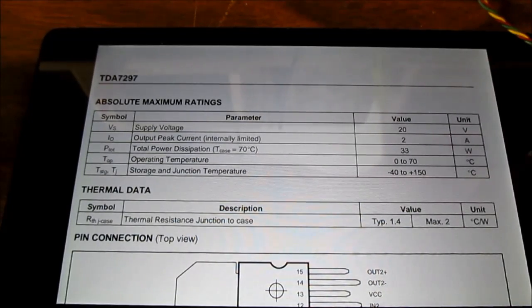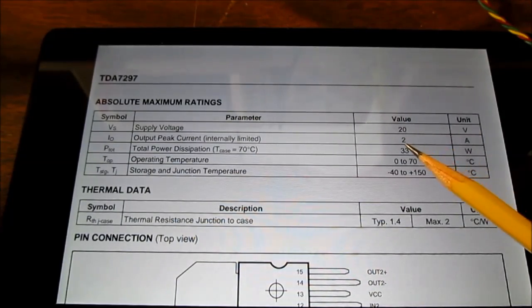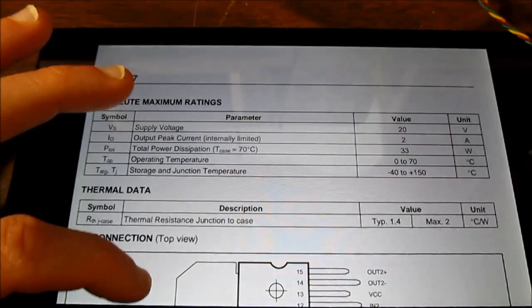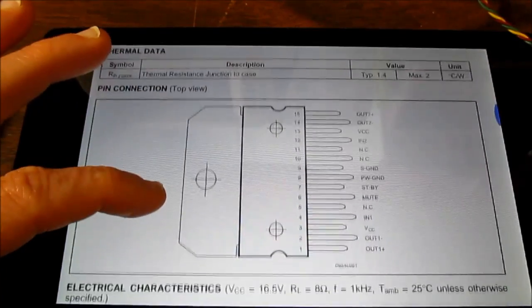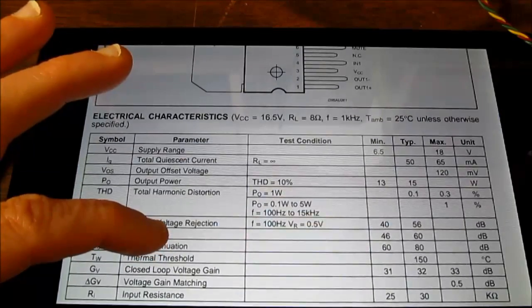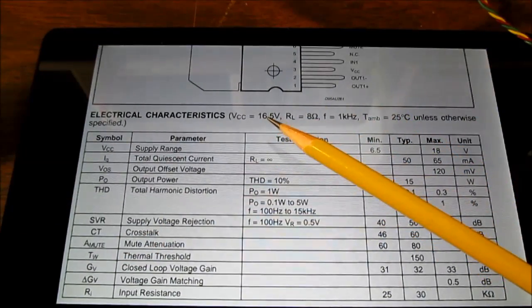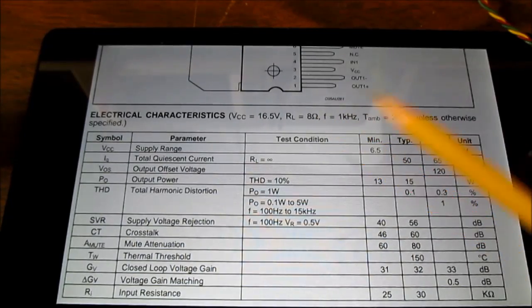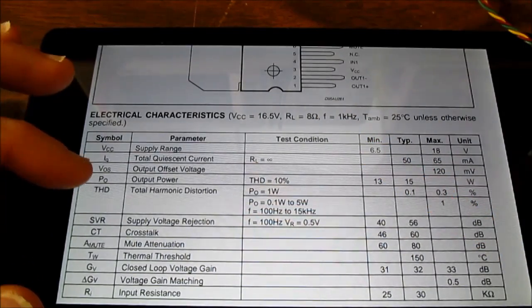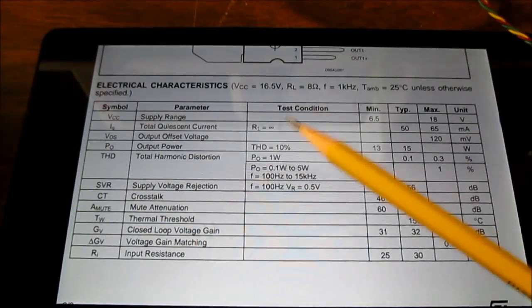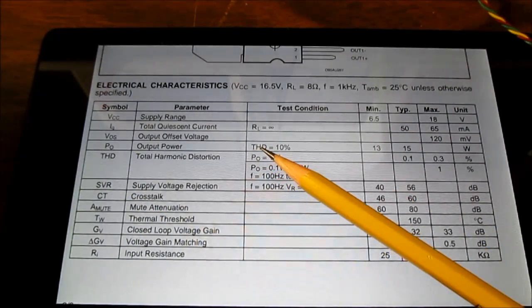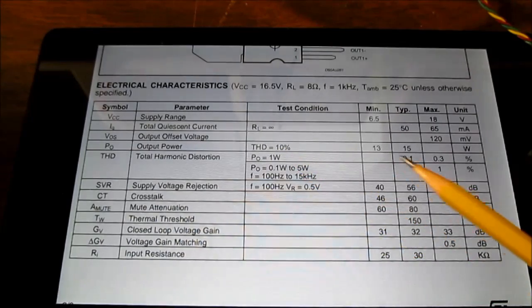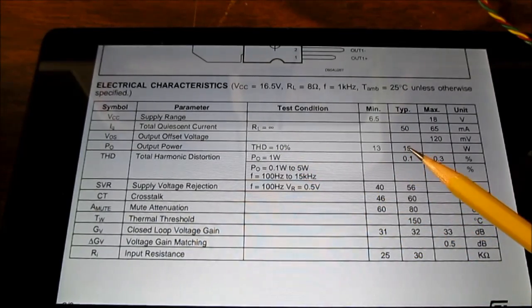This chip seems to be limited to use with 8 ohm loads only. However, at lower voltages, you can use 4 ohm loads because you're not going to hit that peak current at lower voltages. But for its normal operating voltage, which they're saying is 16 and a half volts, you have to use 8 ohm loads minimum.